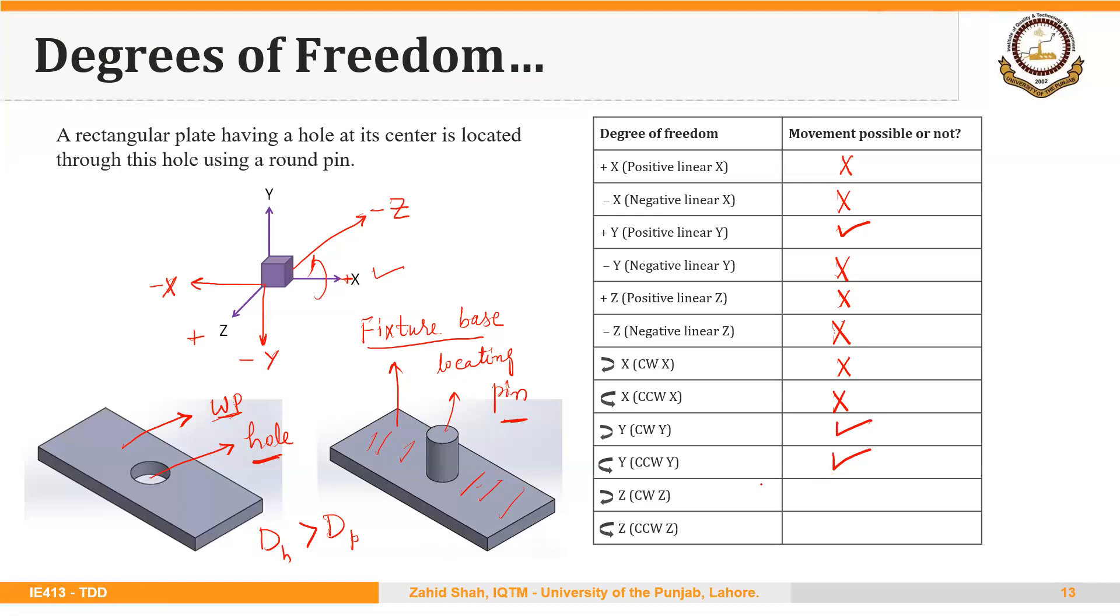What about Z? Because of the height of this pin, it cannot rotate along the Z axis as well. In this case, you can easily see that only certain directions of movement are not restricted.